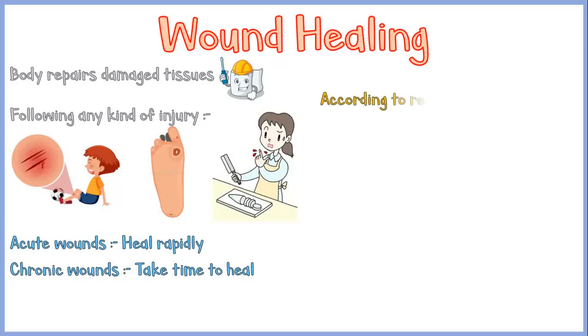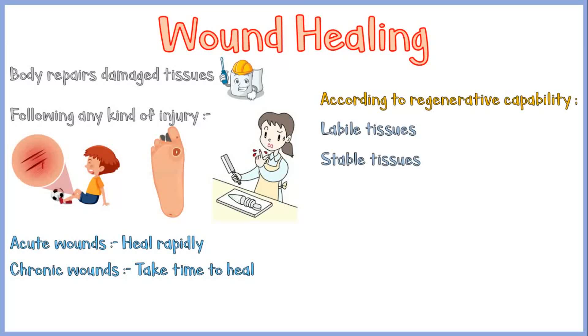According to the regenerative capability, tissues in our body can be divided into three categories: labile tissues, stable tissues, and permanent tissues.